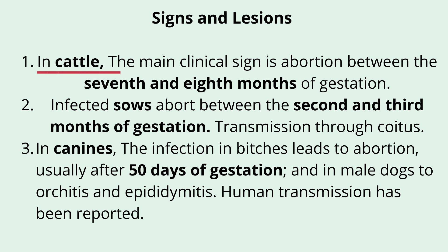Abortion is the most important and significant sign of Brucella infection. In cattle, abortion occurs in the third trimester — the 7th and 8th month of gestation. In infected sows, abortion occurs between the 2nd and 3rd month of gestation. In canines, infection in bitches leads to abortion usually after 50 days of gestation. In male dogs, Brucella infection can lead to orchitis — inflammation of one or both testicles — and epididymitis — inflammation of the epididymis.